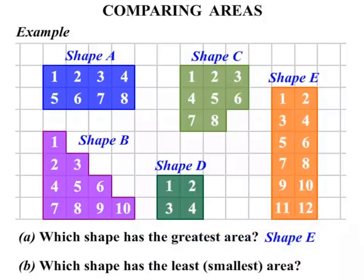Which shape has the least or smallest area? Well the least or smallest we can see that Shape D is only an area of 4 square units. So that is our answer.